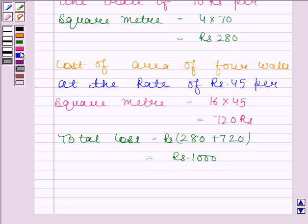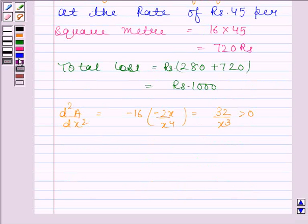Also we can see that d2A by dx2 is equal to minus 16 into minus 2x by x to the power 4 and this is equal to 32 by x cube which is greater than 0. So hence we can say that A is minimum.